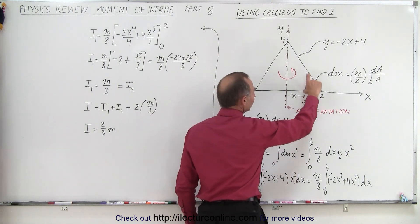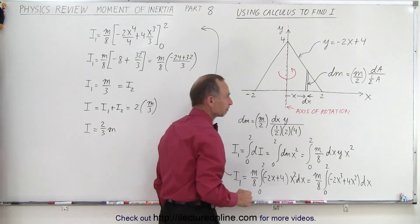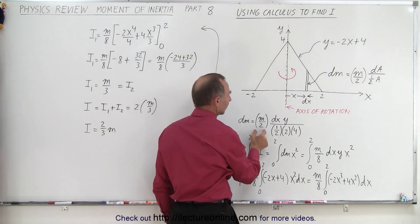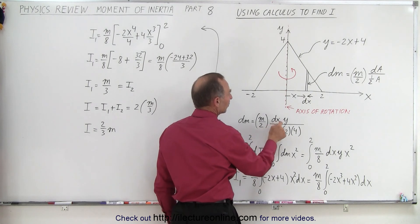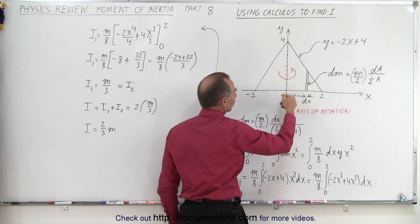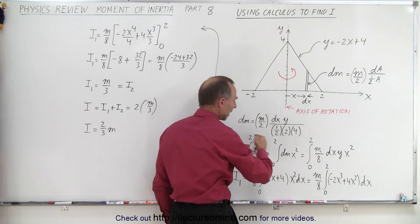dA will be the width, which is dx, times the height, which is y, and y is defined by this equation right here. So dm therefore is half the mass, times the area of this little strip, which is dx times y, times the area of this triangle, which is half the base, times the height, which is 4. So there we have a dm.